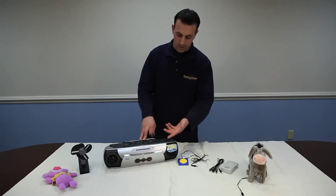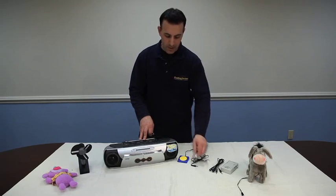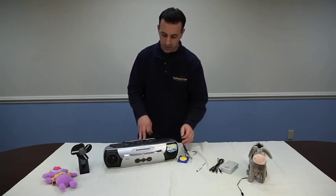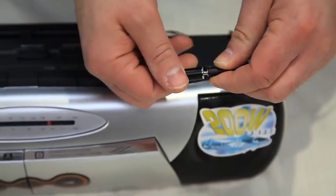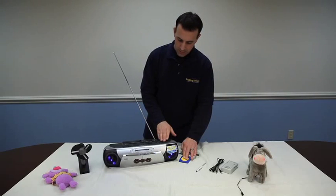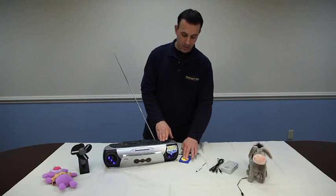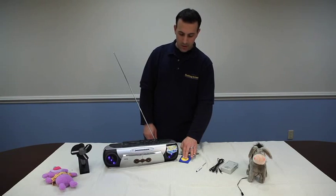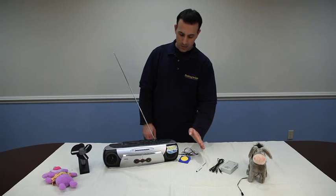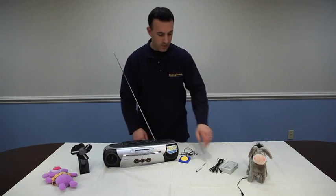So you can definitely use the boom box with that on there, but you're not going to get that function control. Plug in your switch into the jack coming out of the interrupter. As long as I hold my switch, the radio is going to stay on. So there you go, it works really well.